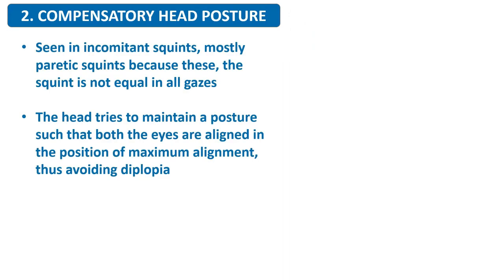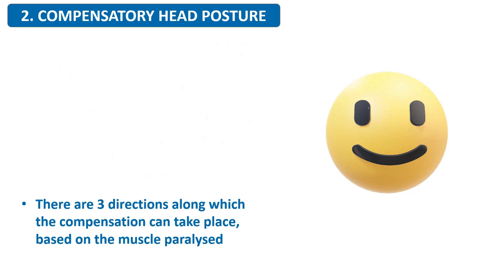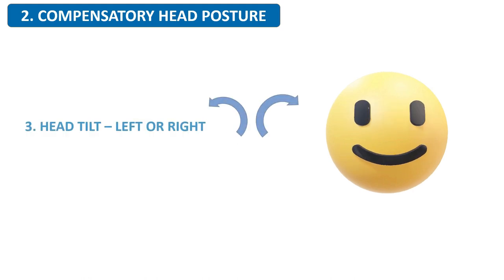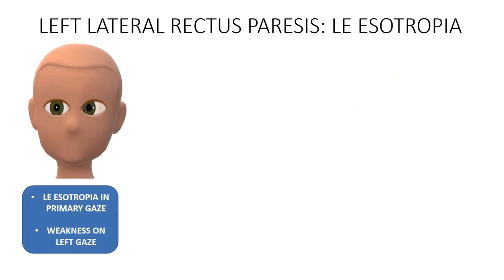The compensatory head posture is an adaptation for incomitant or paralytic squints, because these squints are not equal in all gazes. The head tries to maintain a posture such that both eyes are in a position of maximum alignment, thus avoiding diplopia. There are three directions along which compensation can take place based on the muscle paralyzed: the up-down movement — chin elevation or depression; the face turn — to the left or right; and the head tilt — to the left or right. The most important rule of compensatory head posture is that the direction of compensation is the direction of the action of the paralyzed muscle. For example, in a left sixth nerve palsy, the left lateral rectus is paralyzed — the overacting left medial rectus causes the left eye to be in an adducted position. Maximum diplopia occurs in left gaze and minimum diplopia in right gaze, so the patient keeps the eyes in right gaze to avoid diplopia, requiring a face turn to the left — same side as the paralyzed muscle.